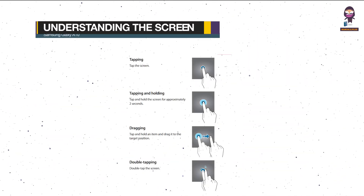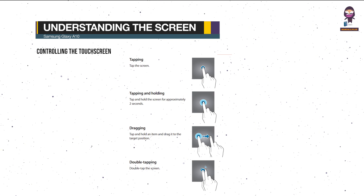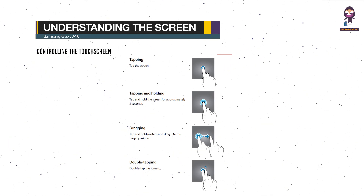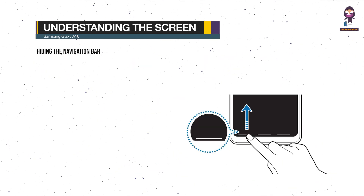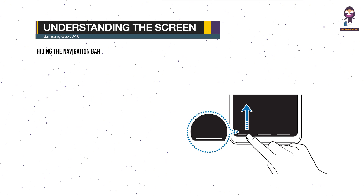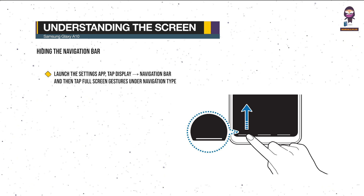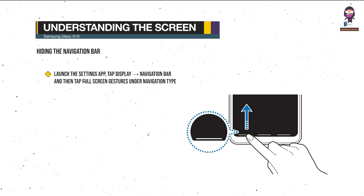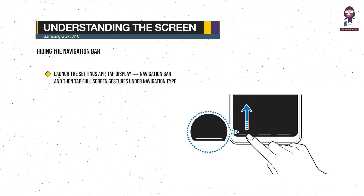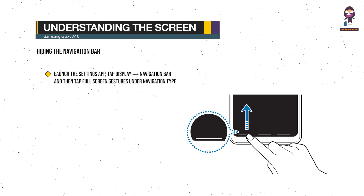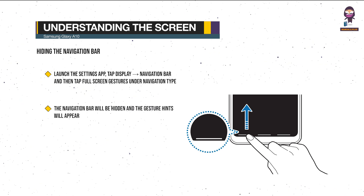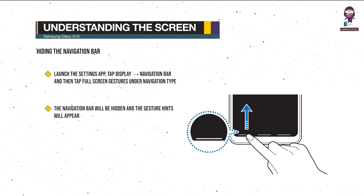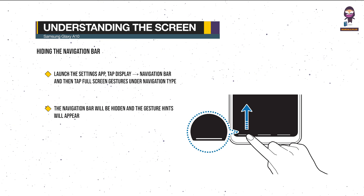Understanding the screen — controlling the touchscreen. To hide the navigation bar, launch the Settings app, tap Display, then Navigation Bar, and then tap Full Screen Gestures under Navigation Type. The navigation bar will be hidden and the gesture hints will appear where the soft buttons are located.